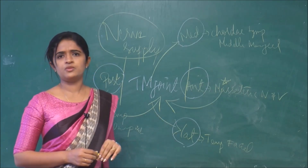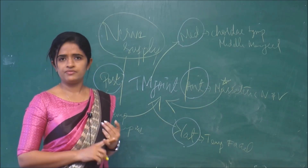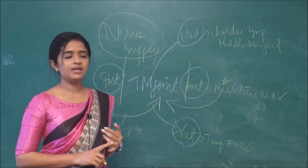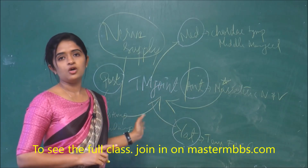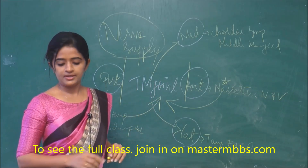So, for the nerve supply of the temporomandibular joint, we have two nerves mainly: the masseteric nerve and the auriculotemporal nerve.